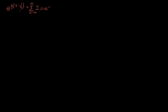In this video I want to derive the generating function for Bessel functions. In particular, I want to show that the function e to the x over 2 times (t minus 1 over t): if you expand this function in terms of t, then all of the coefficients are given in terms of Bessel functions J sub n of x.